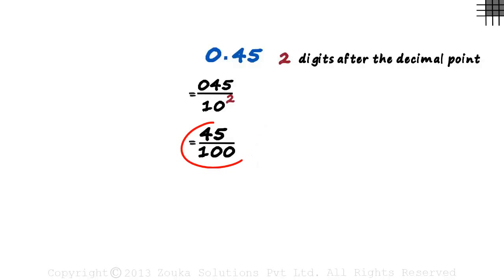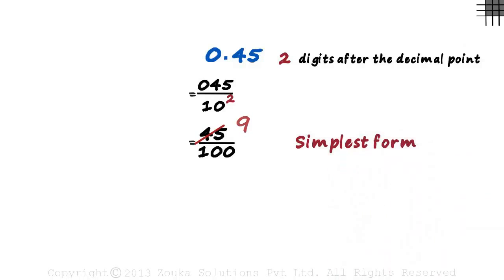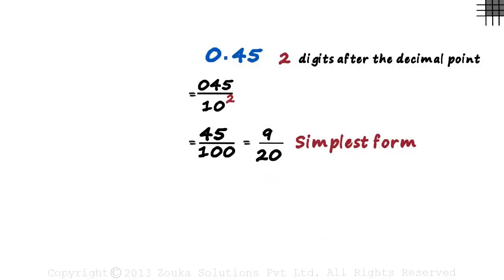This answer is not incorrect, but it's not complete. We have to reduce it to its simplest form. 5 multiplied by 9 equals 45 and 5 multiplied by 20 equals 100. This equals 9 by 20. This is the answer since it's in the simplest form. 0.45 was written as 9 by 20. All we had to observe was the number of digits after the decimal point.